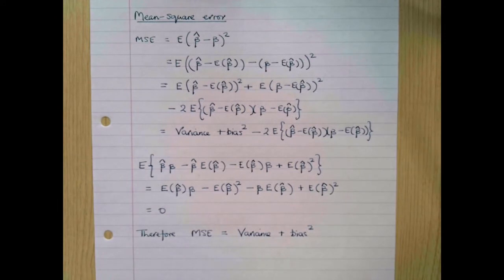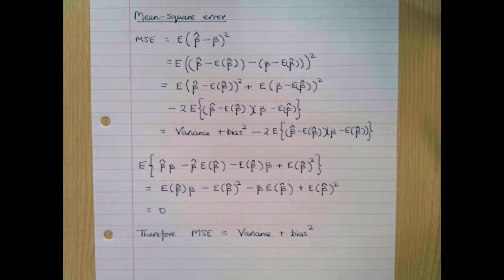In this video, I'm going to expand on one of the results that we reported in the lecture but we didn't go through in great detail. That's the result that we can decompose the mean square error of an estimator into its variance plus the square of its bias.